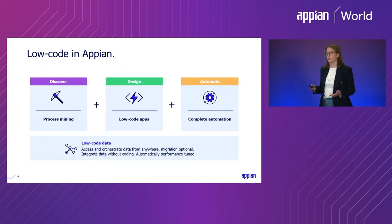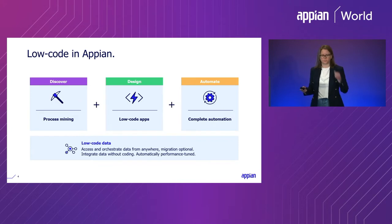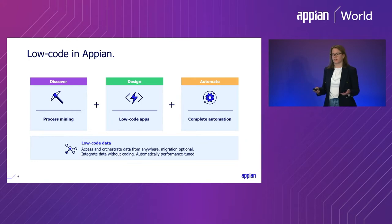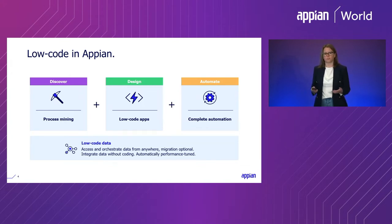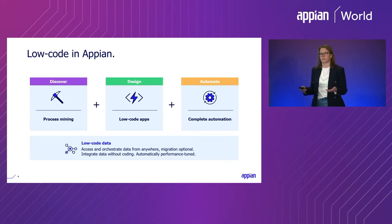We also used this in Appian, so it helped us be safe through the pandemic. The real point is that it was really fast to roll out workforce safety and keep rolling out changes as the pandemic evolved because it was built with low code. With Appian, you can discover, design, and automate your business processes all while floating on a really strong foundation of low-code data. Process mining helps you discover the process that you don't even know exists yet and find out where to be more efficient. Complete automation lets you focus on the tasks that humans could do but it's not really a good use of their time — so what can we do with little or no human intervention?